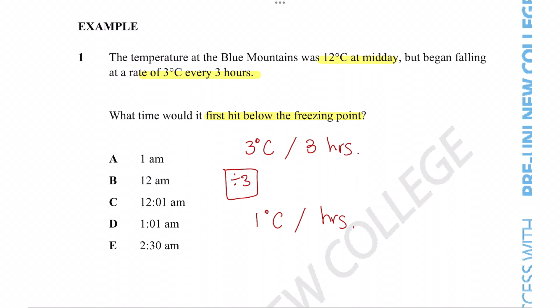Now it is currently 12 o'clock at midday, and the temperature is 12 degrees Celsius. The question wants us to figure out what time would it be when it first hits below the freezing point.